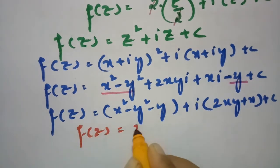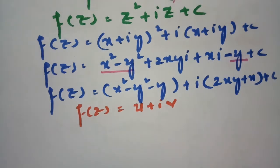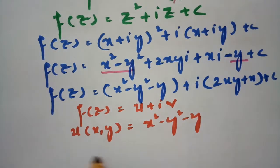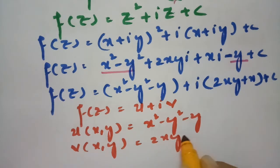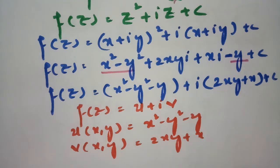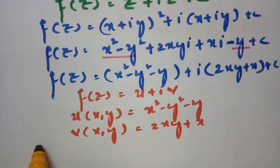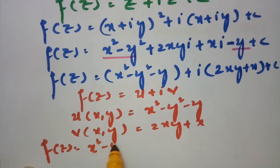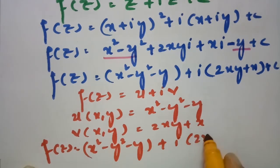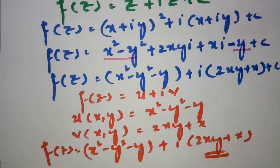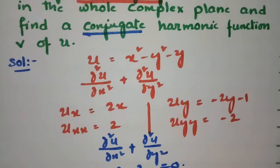Separating real and imaginary parts: the real part is x² - y² - y, and collecting imaginary terms gives i(2xy + x). So f(z) = (x² - y² - y) + i(2xy + x) + c. Since f(z) = u + iv, we have u = x² - y² - y and the conjugate harmonic v = 2xy + x.